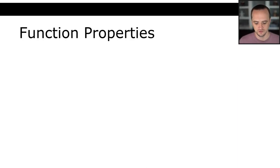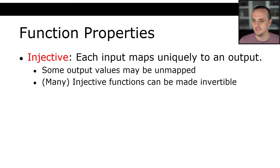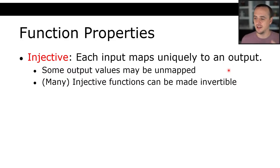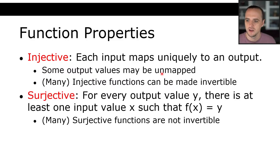More function properties: injective — each input maps uniquely to an output, meaning some output values may be unmapped, and many injective functions can be made invertible. Think of it this way: if I map all 26 letters of the alphabet into integers between 0 and 100, each letter maps uniquely to an integer, but there are many integers left over. Injective does not guarantee all of the output range is used, but it does guarantee all of the input range maps uniquely.